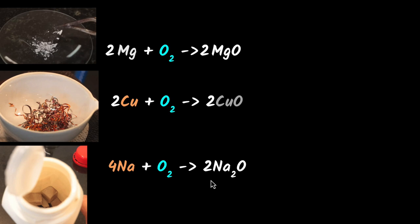So in general, what do you get when metals react with oxygen? Well, metals react with oxygen to give you metal oxide.